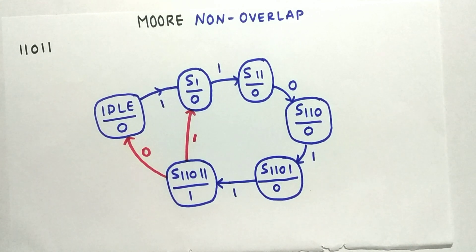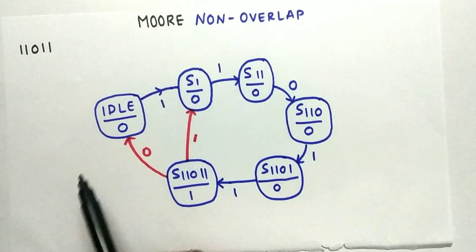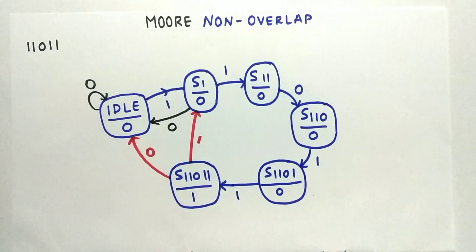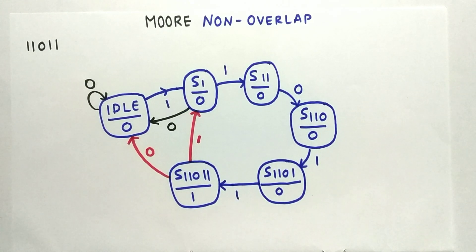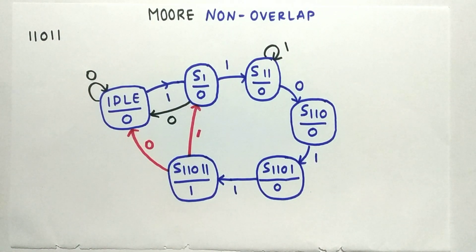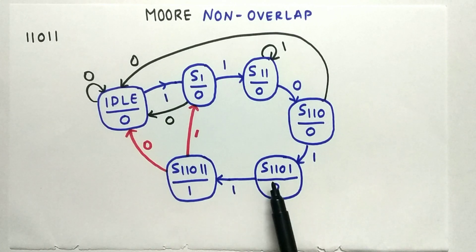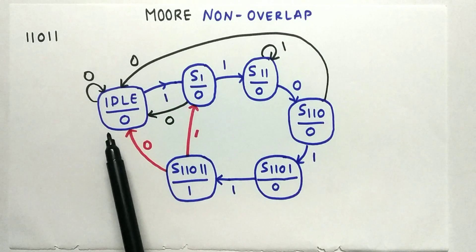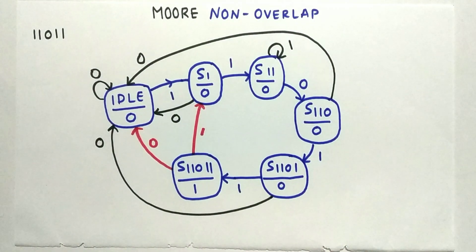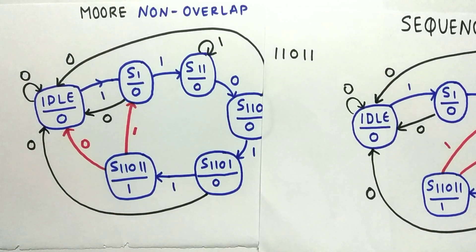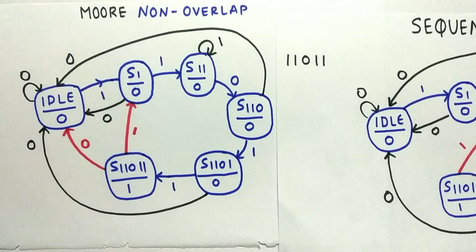Completing the remaining transitions: at Idle, input 0 stays at Idle. At S1, input 0 goes back to Idle. At S11, input 1 stays at S11. At S110, input 0 goes back to Idle. At S1101, input 0 goes back to Idle. All transitions are now complete. The difference between Moore overlap and non-overlap lies entirely in the last state S11011 — that state is the game changer between the two cases.